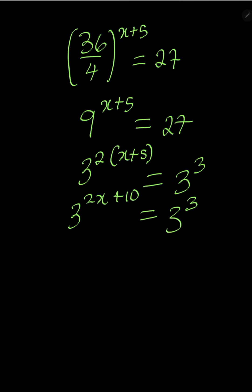Now their bases are the same, you are free to equate their powers. Therefore, 2x plus 10 is equal to 3. 2x is equal to 3 minus 10. 2x is equal to minus 7.